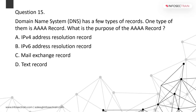DNS has a few types of records. One type is the AAAA record. AAAA records are used for 128-bit addresses. Since IPv6 holds 128-bit addresses, AAAA records hold IPv6 addresses. They are most commonly used to map a hostname to an IPv6 address.